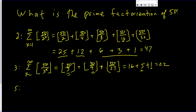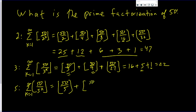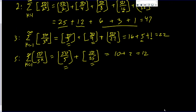Let's consider 5. We want to add up the greatest integer function of 50 over 5 to the k, as k goes from 1 to infinity. We get the greatest integer of 50 over 5, plus the greatest integer of 50 over 25. The next one, 50 over 125, is less than 1, so the greatest integer function gives 0. This is 10 plus 2, a grand total of 12.